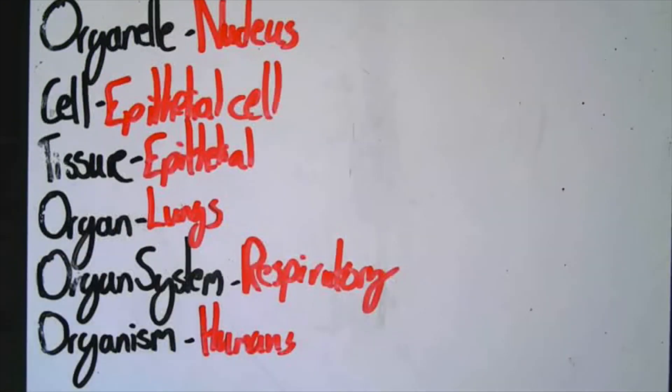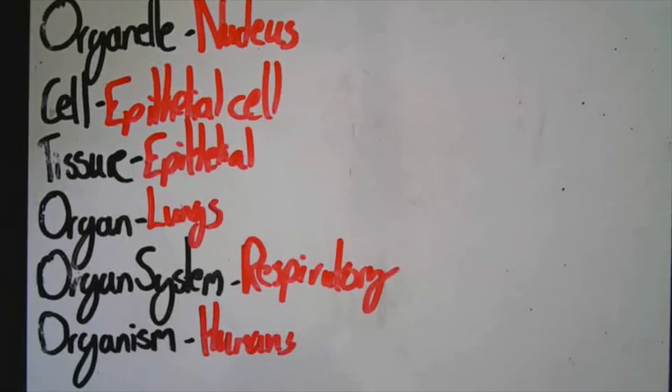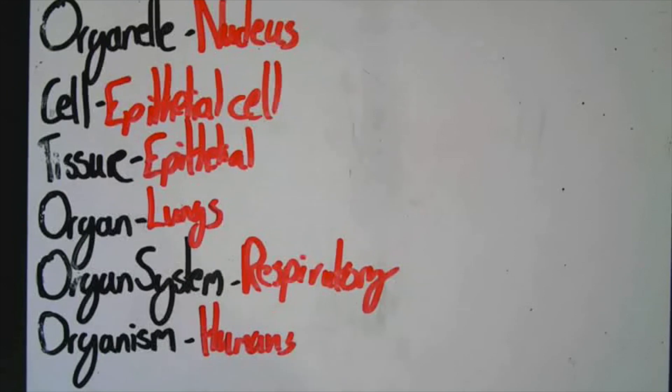So there we have it, the different levels of organisation in a multicellular organism. The smallest being an organelle, which makes up cells, and then tissues, organs, organ systems, and organisms. Organisms, whether they be unicellular or multicellular, need to uptake nutrients and substances to help them survive.